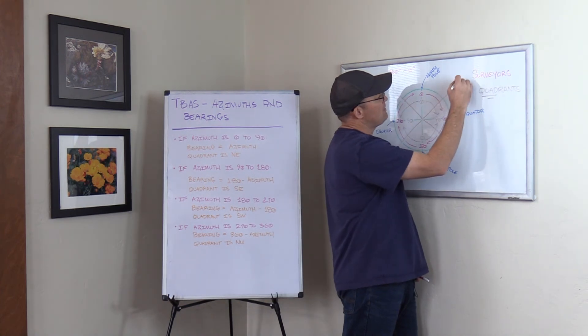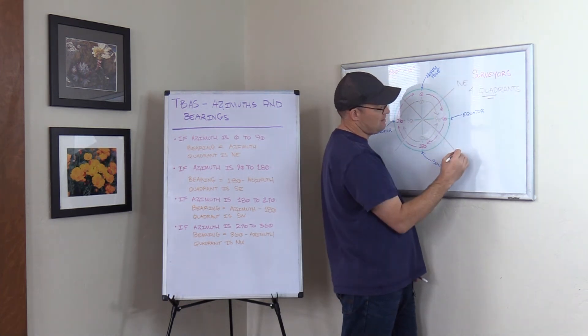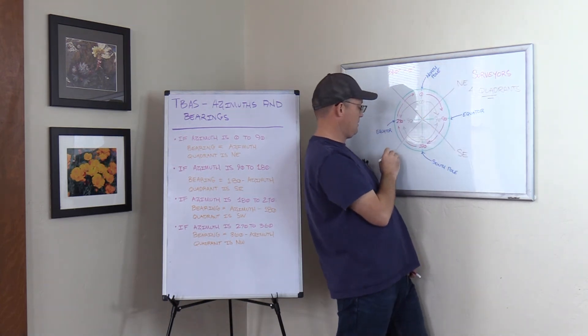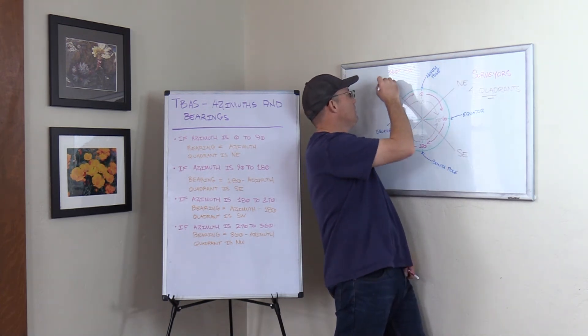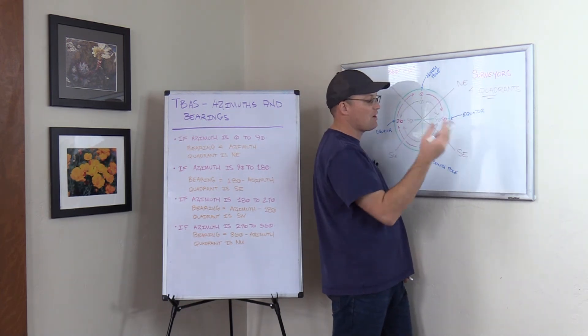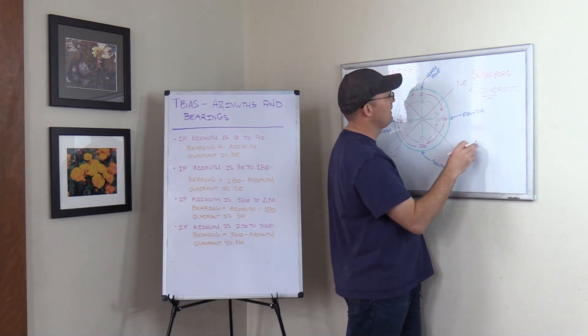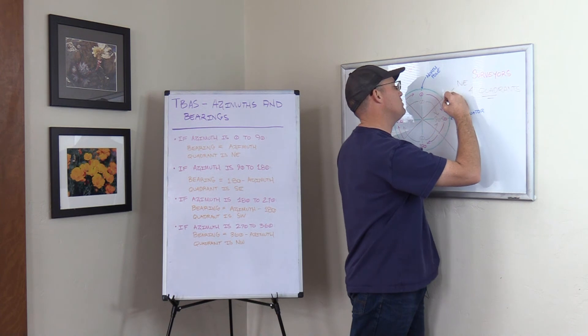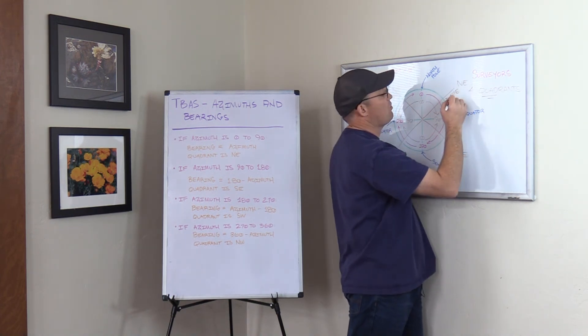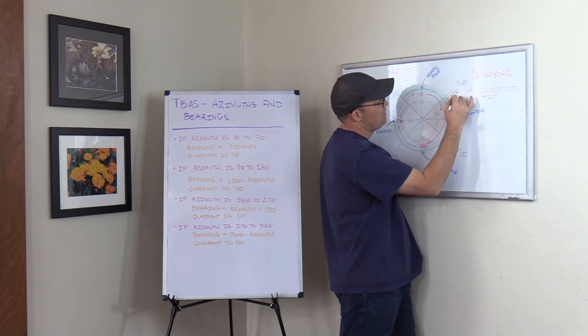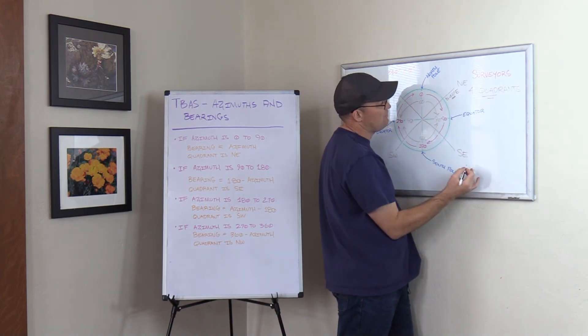This is the northeast quadrant up here. This is the southeast quadrant. Northeast, southeast, southwest quadrant over here. Northwest quadrant. In order to have a bearing, you always got to know what quadrant you're talking about. So this line right here, this would be north 45 degrees east. That's the quadrant. Northeast is the quadrant. 45 is the angle value of the bearing.